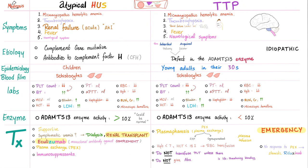Comparing atypical HUS and TTP: atypical HUS has the same pentad as TTP — microangiopathic hemolytic anemia, thrombocytopenia, acute renal failure, fever, and neurological symptoms. However, there is a difference in which features are more prominent. Renal failure is more common in atypical HUS than in TTP. On the other hand, neurological symptoms are more common with TTP than with atypical HUS.